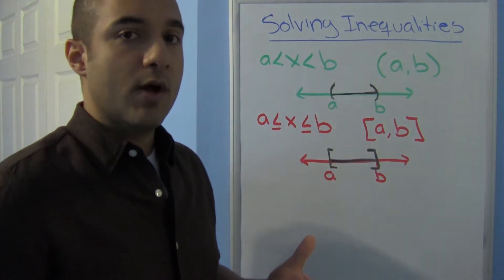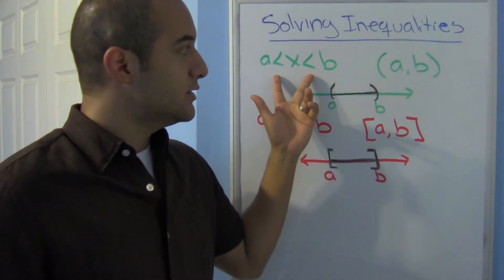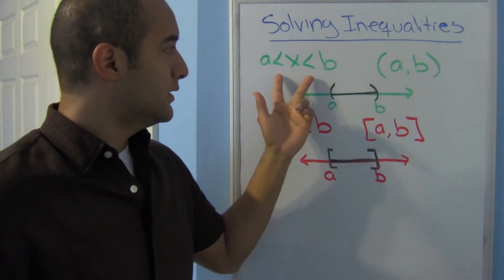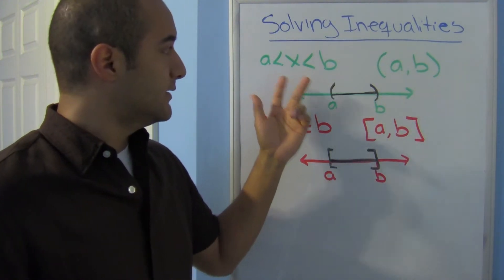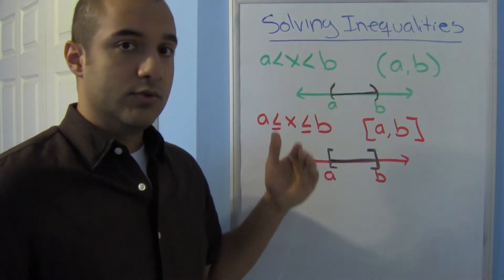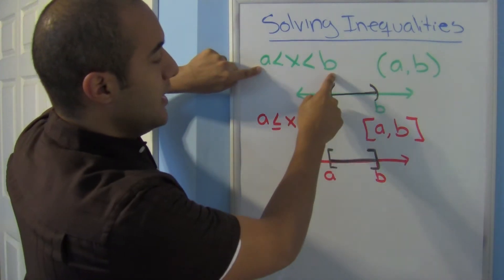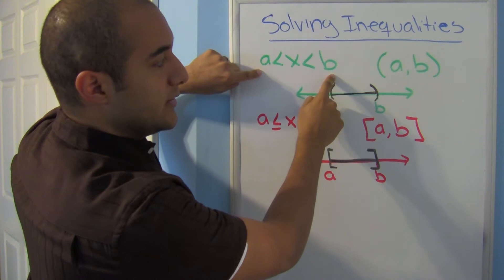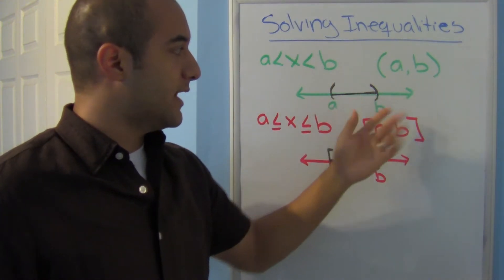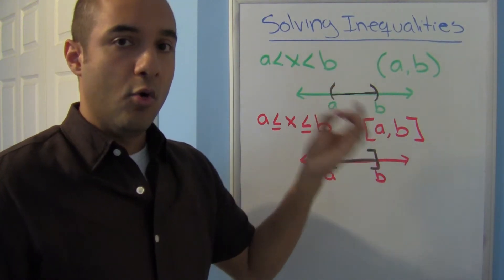Now before we start solving inequalities, let's take a look at inequality notation and interval notation. Notice that here we just have a less than sign and it does not have an equal to. When we convert to interval notation, notice that the numbers that x is between is written in parentheses, and when we graph that, notice that I use parentheses instead of the regular open circles.